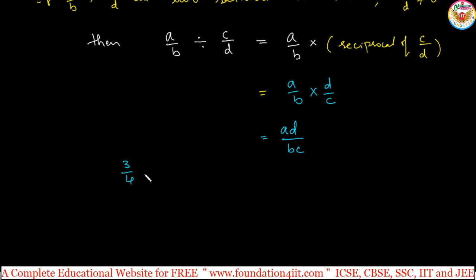So 3 by 4 is one number divided by 5 by 12. 3 by 4 is a fraction. We can write now 3 by 4 as it is. The division symbol, you must keep it as into, then 5 by 12 reciprocal, that is 12 by 5.